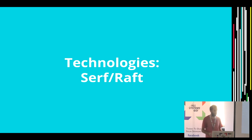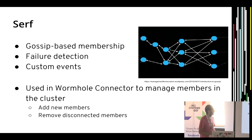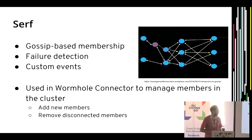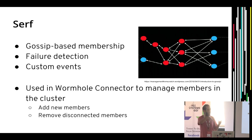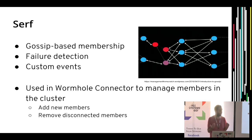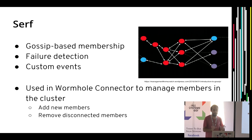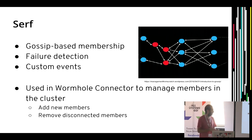Serf is a gossip distributed protocol. It basically allows you to have cluster membership and pass messages to all members of your cluster. As shown in this gif, one node receives a message and passes it to other nodes, until the whole cluster knows the message being sent. We use Serf in the wormhole connector to add new members — you just start the connector and tell it another member's address, and it joins the cluster. It also provides a way to detect when a member has disconnected, to remove it from the cluster.